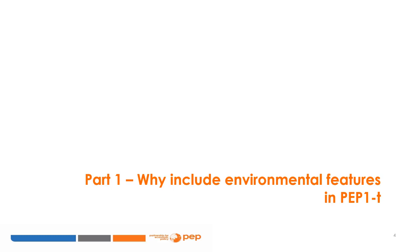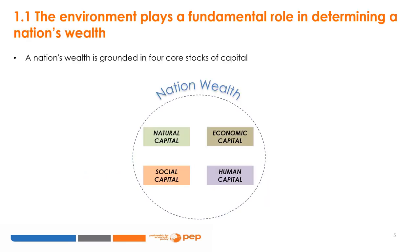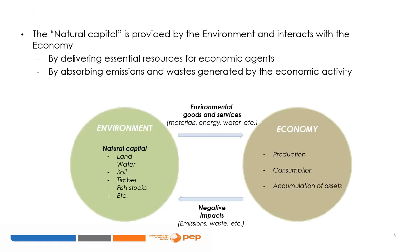The first question addressed in this module is why including environmental features in the PEP1T model might be relevant. In economic literature, there is a growing consensus that the environment plays a fundamental role in determining a nation's wealth. It forms part of the four core stocks of capital — along with economic capital, human capital, and social capital — by comprising many assets such as land, water, soil, timber, fish stocks, etc. It is often said that the environment provides the natural capital for the economy.